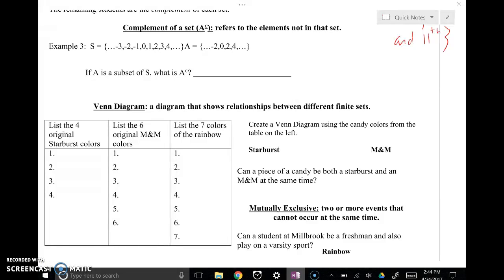If you can do example 3, pausing your screen and then unpausing it to see if you get the right answer. Did you get the right answer? That's correct. If the set A is all of the even integers and set S is all integers, then the complement of set A is every integer that's not an even integer or known as the odd integers.